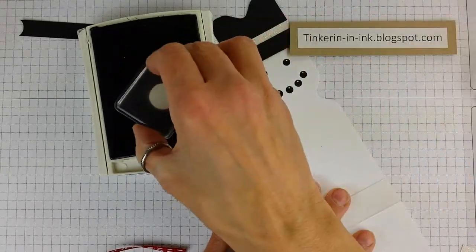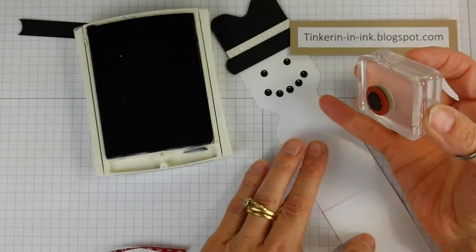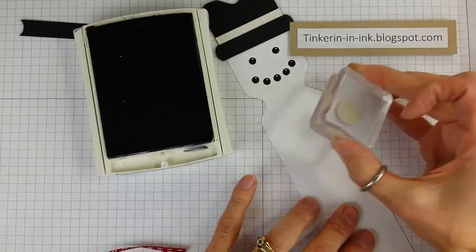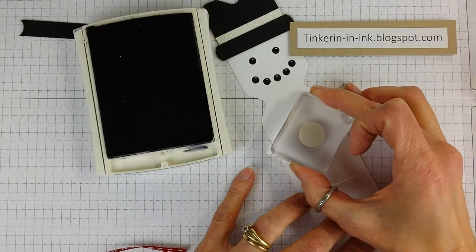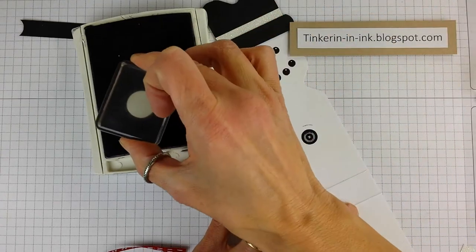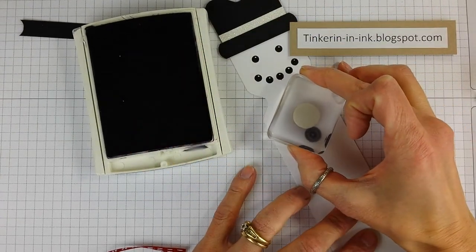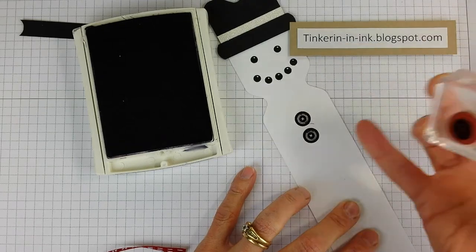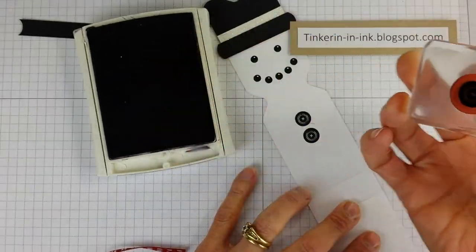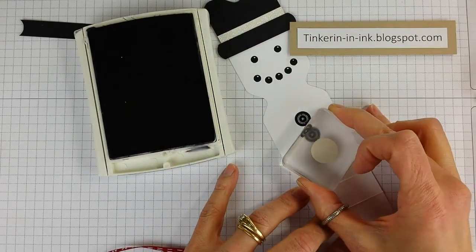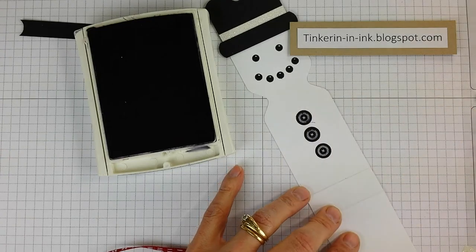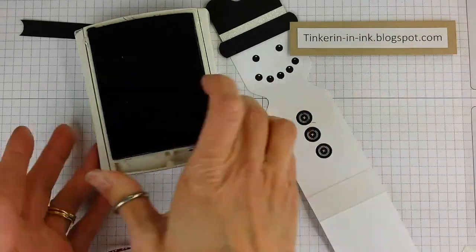And then we're going to do his buttons. I do the middle one first. So about just above halfway down and in the center. I hate it when I over stamp. That's when you get that line from pushing too hard and having it on the edge. That's okay. We're not going to stop.